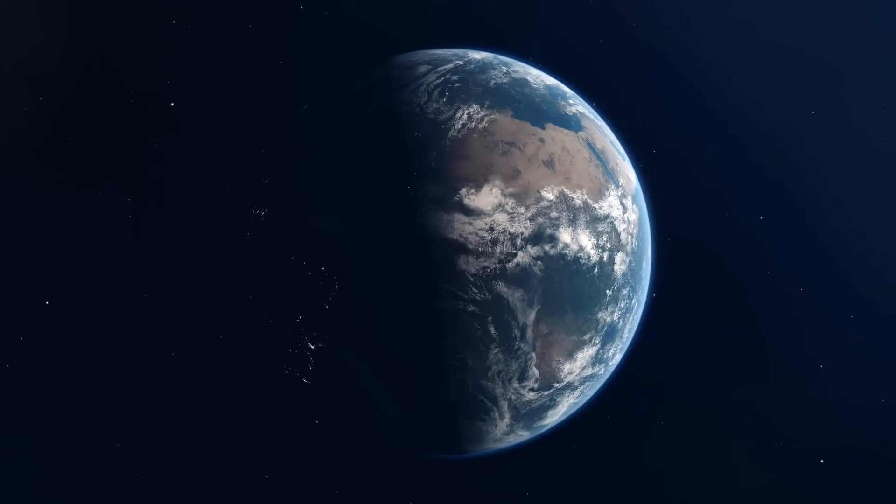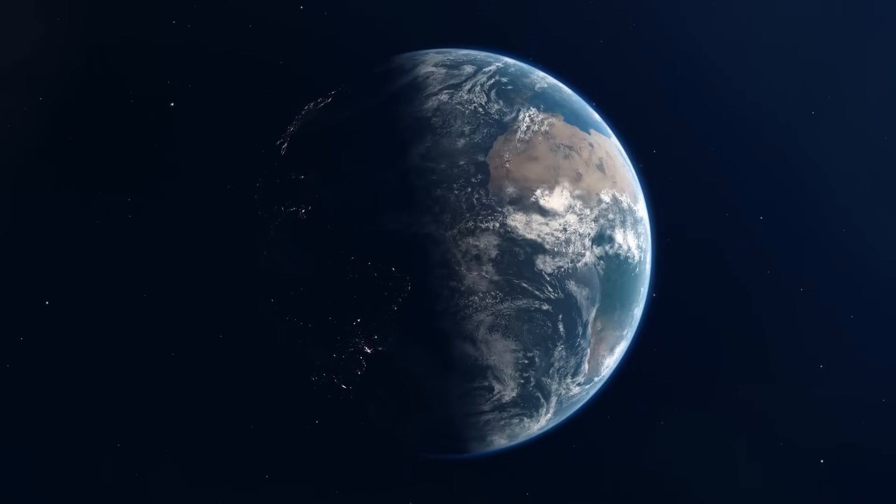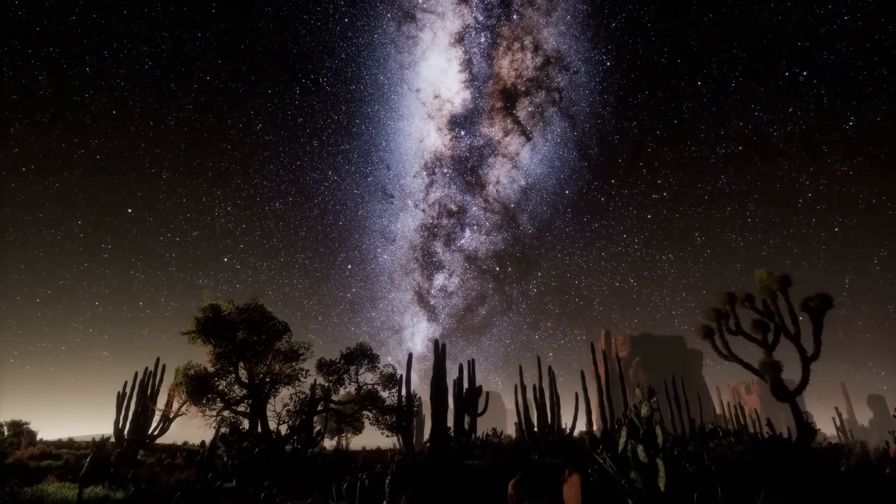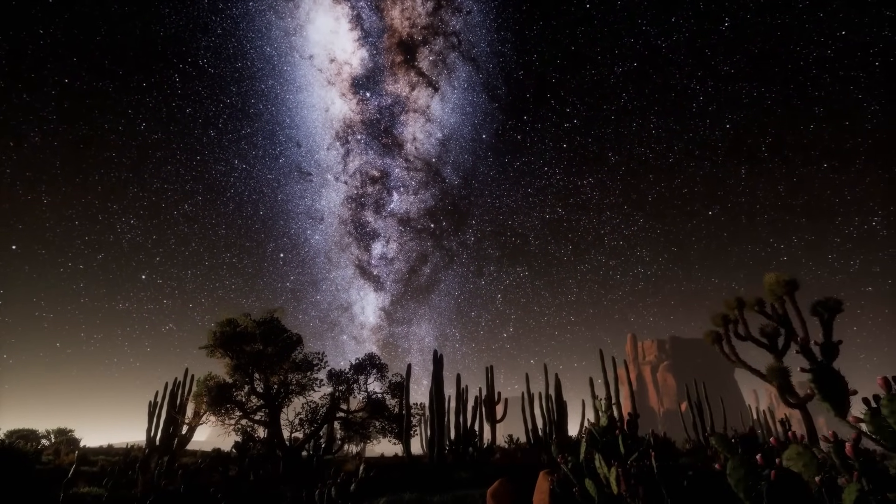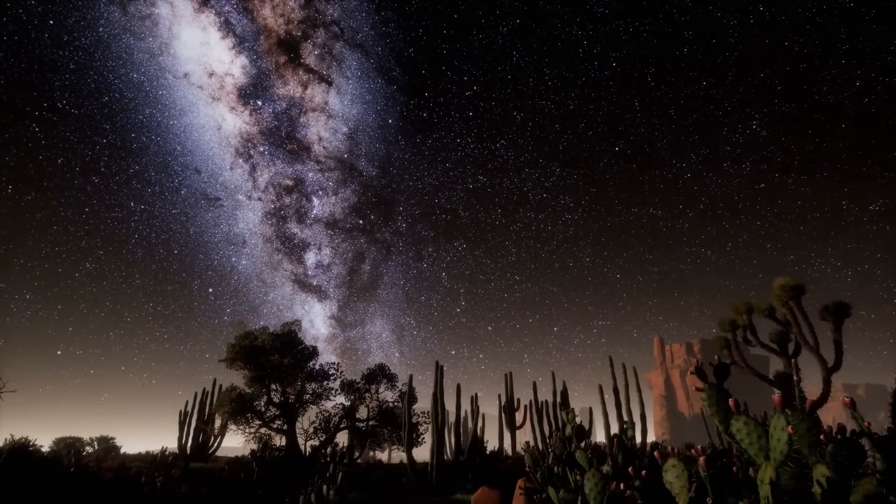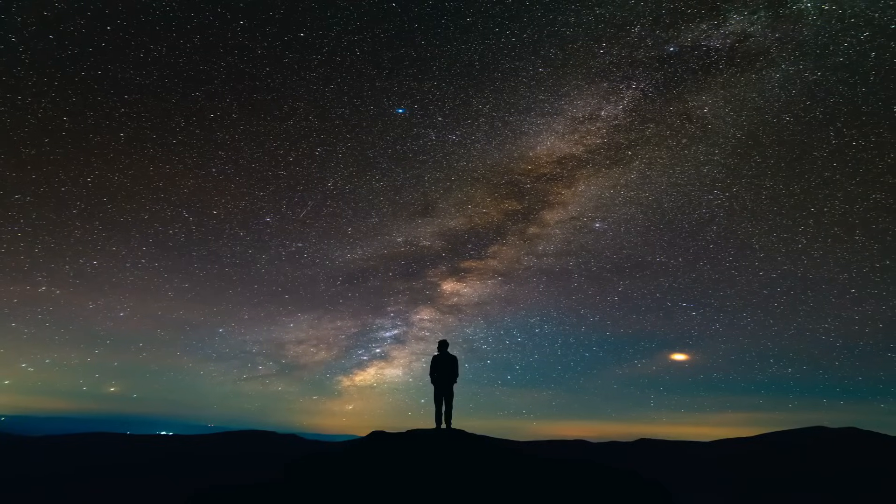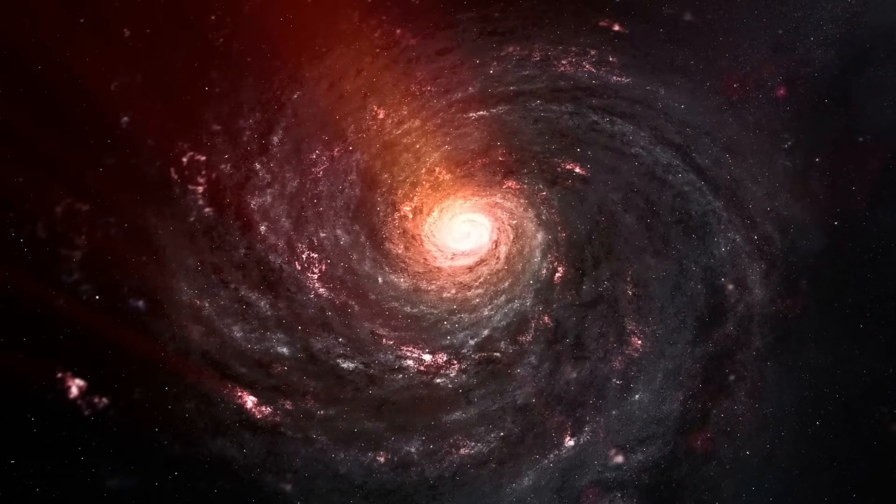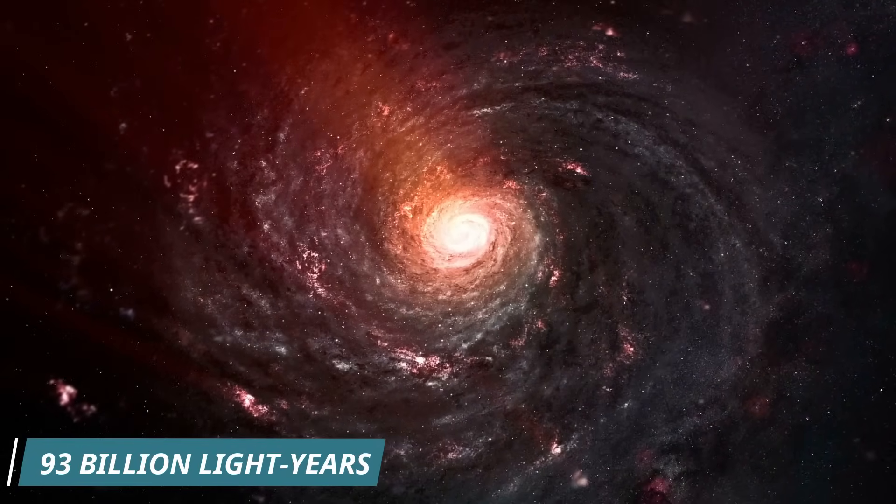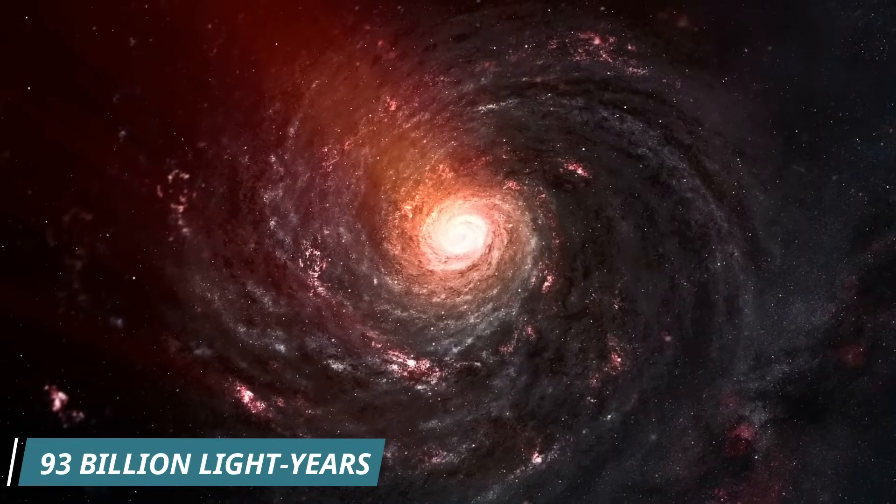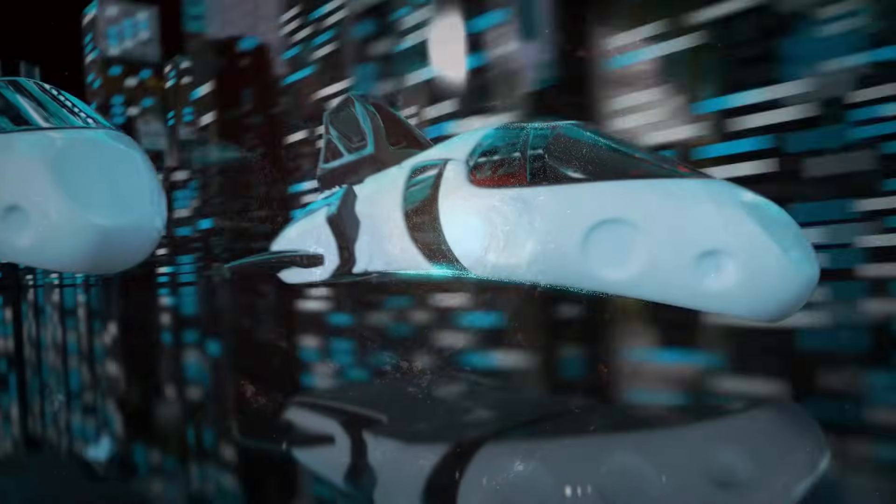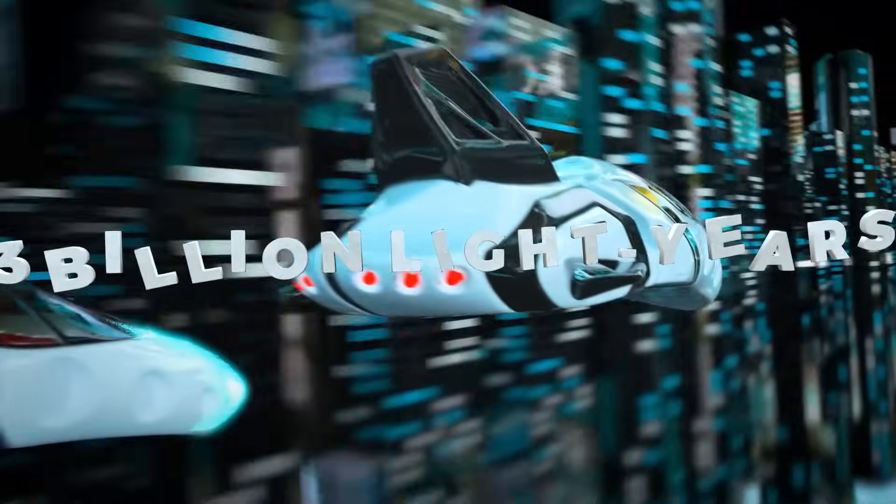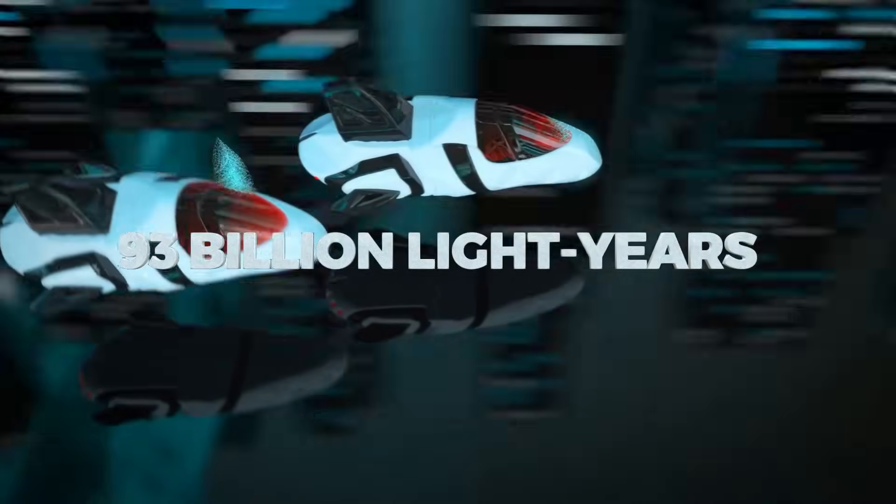We're talking about the part of the universe that we can see from Earth when we say observable universe. You can think of the observable world as your neighborhood. It's the part of town you know well because you've been there and looked around. But just like there's more to the world than your town, there's also a lot more to the universe than what we can see right now. The universe we can see is thought to be about 93 billion light years across. This is such a huge space that it's hard to understand. Imagine having a car that is so fast it can move at the speed of light. It would still take you 93 billion years to get from one end of the universe that we can see to the other.